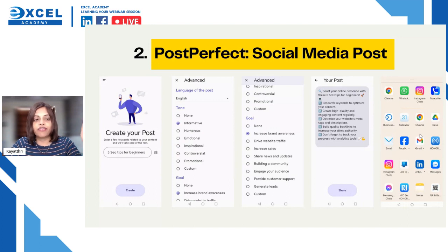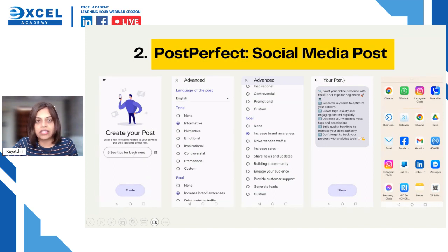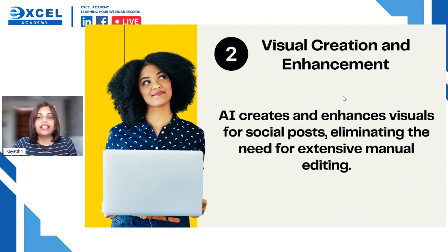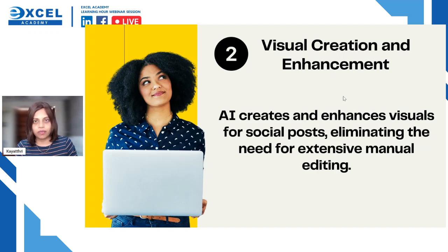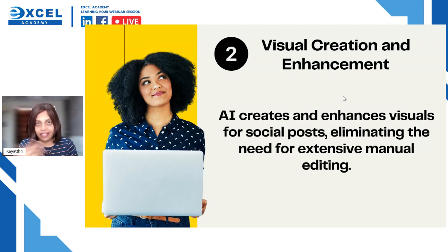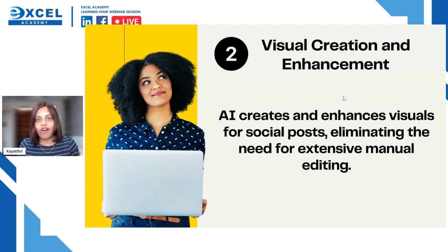From the time I put in 'five SEO tips for beginners' to getting the post output is less than a minute — probably just a few seconds. Now, once you have your captions ready, you need to look into visuals. You want to create good visuals, and you may already have some images taken with your smartphone, but you need to enhance them. AI tools can create and enhance these visuals without spending a lot of time on manual editing.